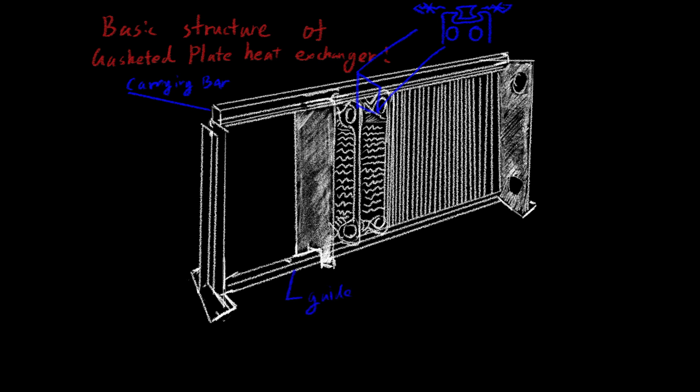There is also a guide bar at the bottom to further stabilize the plates. The support column is used to provide structure for the entire machine and there is one on each side.